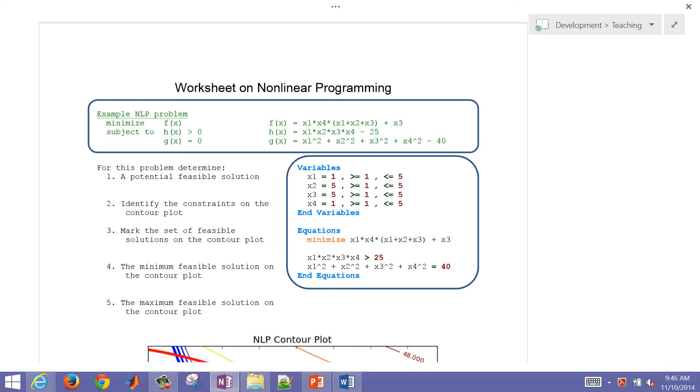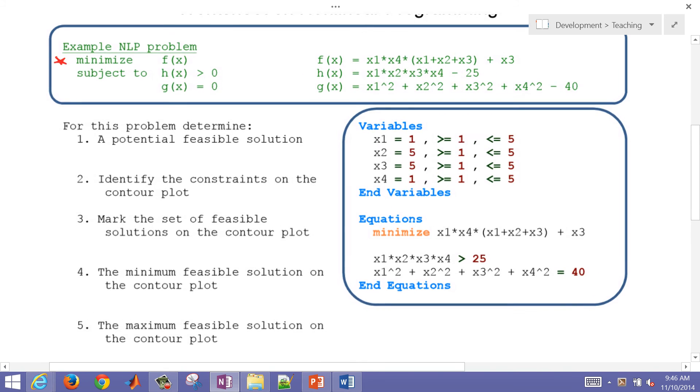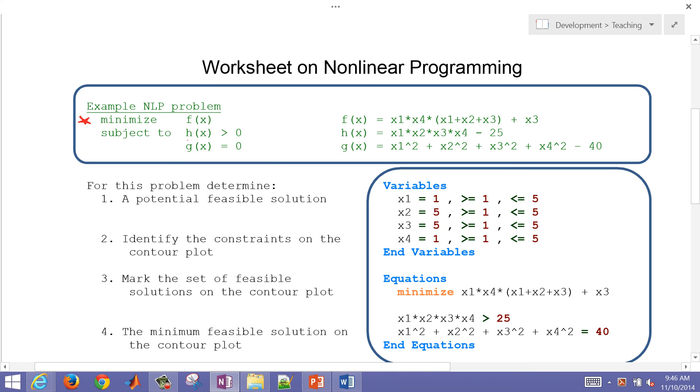This is a worksheet on nonlinear programming, and we're going to go through an example problem where we solve a nonlinear objective function subject to two nonlinear constraints. One is an inequality and one is an equality constraint. So we have a standard form where we have an objective function, an inequality constraint, and an equality constraint. We're going to solve this problem.